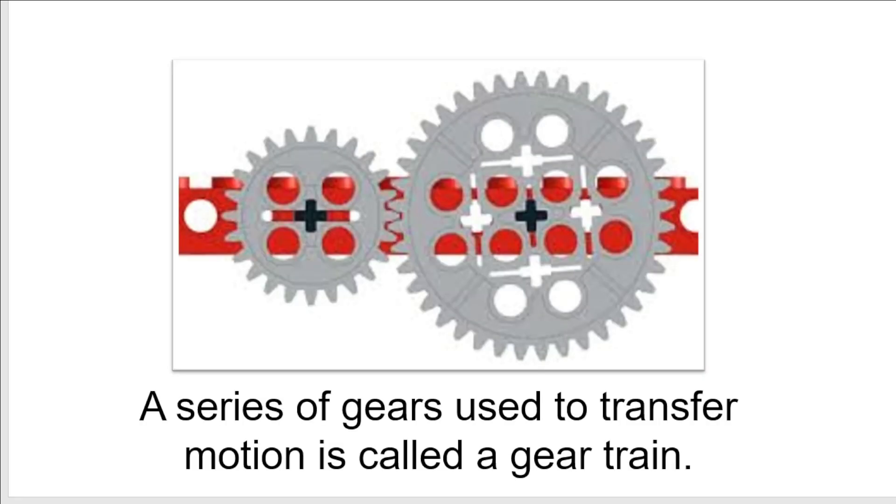So gears, we have looked at gears in lesson 7, and gears are used to change the direction of motion. A series of gears used to transfer motion is called a gear train, and this is a simple gear train because there are only two gears in it. Any gear train with more than two gears is called a compound gear train, and today we are only looking at simple gear trains.